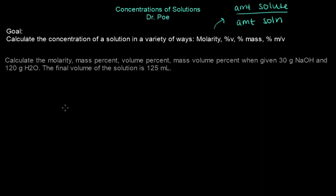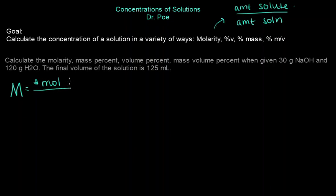Right now we're going to be working on concentrations of solutions. The wonderful thing about concentrations is there are many different names for them, but the idea is all the same — it's the amount of solute over the amount of solution. In molarity, represented by a capital M, that is the number of moles of the solute, because the solute is always on top. The solute is what gets dissolved, like Kool-Aid is a solute.